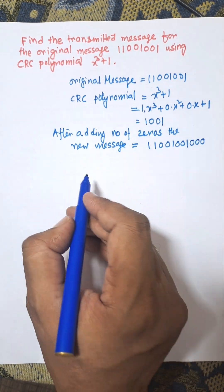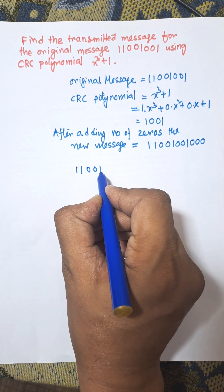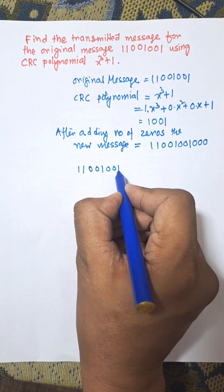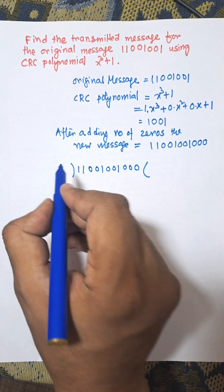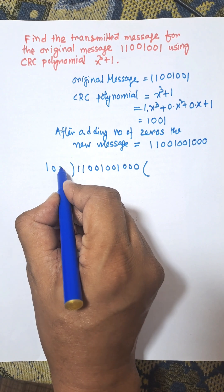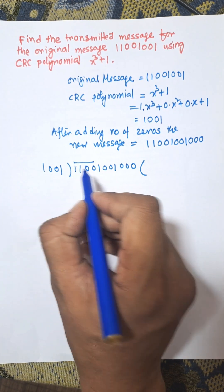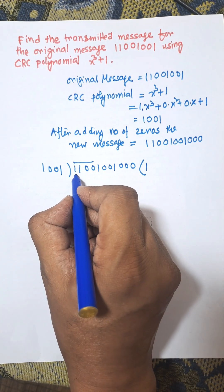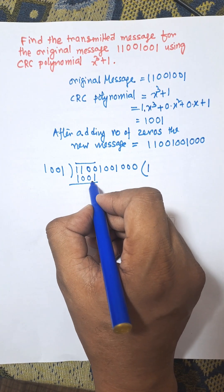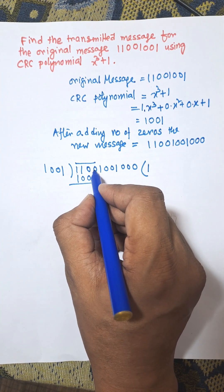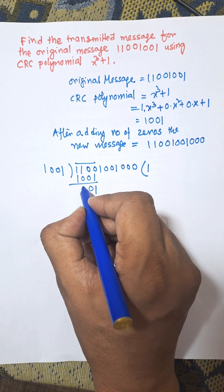Now we need to divide the new message: 11001001000 divided by 1001. Here we select 4 bits. The first bit is 1, so we multiply by 1 and use 1001. We apply the XOR operation — same input gives 0, different input gives 1 — resulting in 0110.